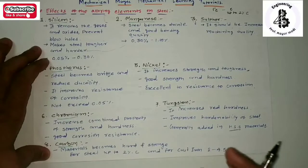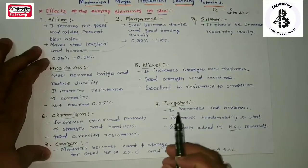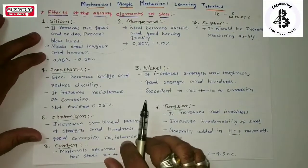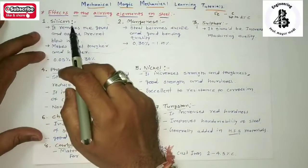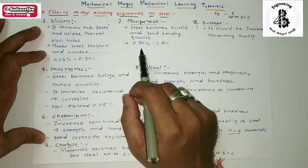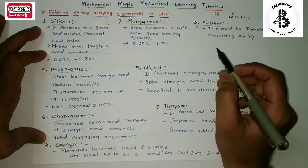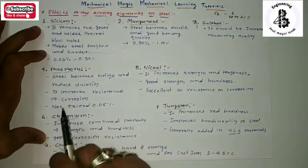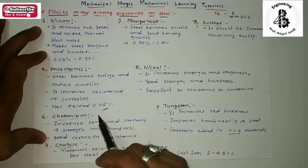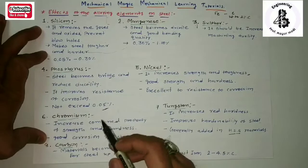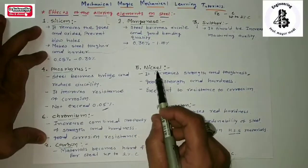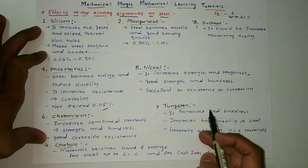If you want to enhance particular steel or cast iron materials, you should add alloying elements in proper proportions. In summary, for all kinds of steels: silicon is required at 0.05% to 0.3%, manganese at 0.3% to 1%, sulfur less than 0.5%, and phosphorus not exceeding 0.05% — since it increases brittleness, meaning zero deformation under tensile force. Other key elements include nickel, chromium, tungsten, and carbon.